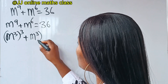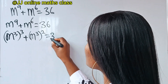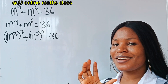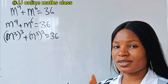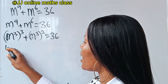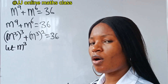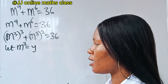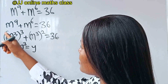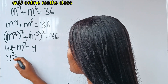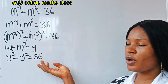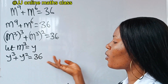So we have m to the power of 3, raised to the power of 3, plus m to the power of 3, raised to the power of 2, equals 36. Now let m to the power of 3 equal y. We can then write this as y to the power of 3 plus y to the power of 2 equals 36, which is a cubic polynomial.